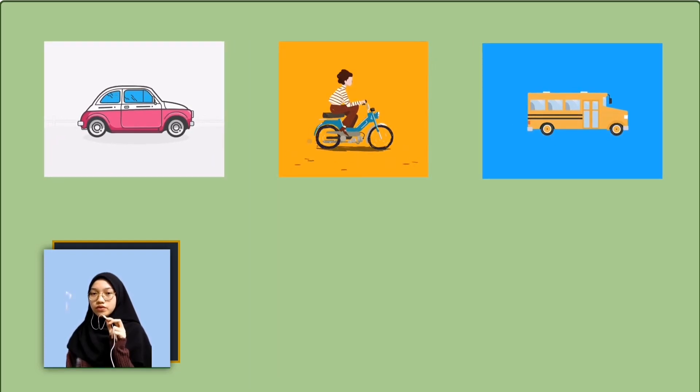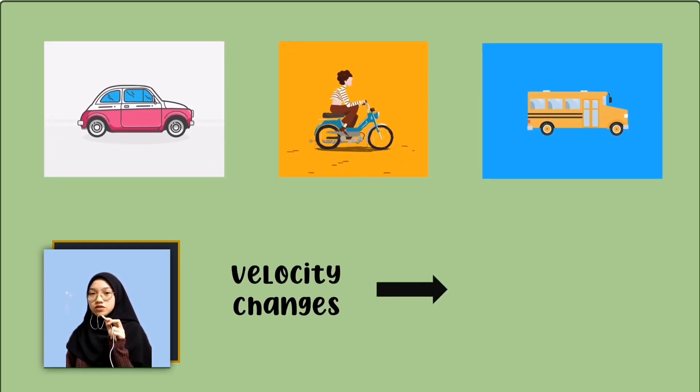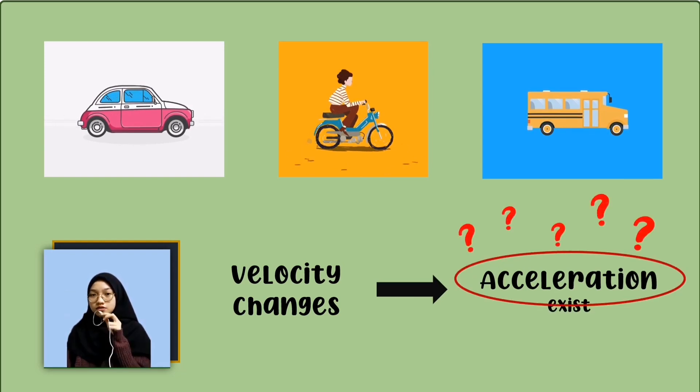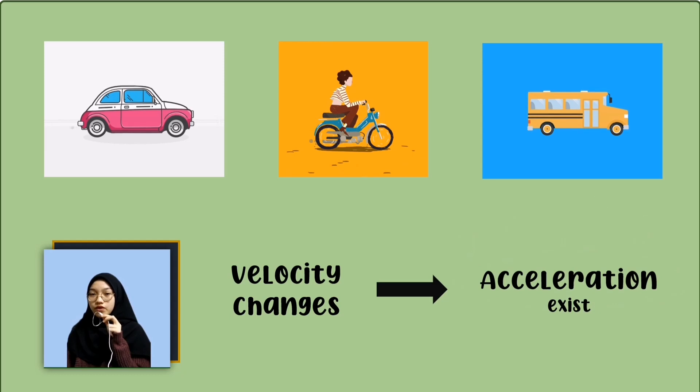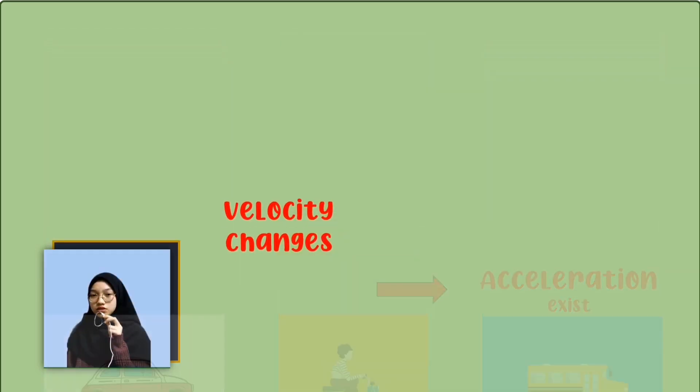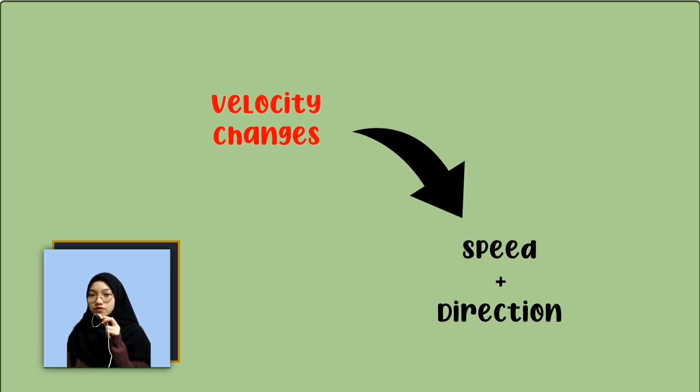Simply put, when velocity changes, we have acceleration. So what is acceleration? Just now I mentioned that when velocity changes, there will be acceleration. Do you remember what is velocity? It is speed with direction and it is a vector quantity.